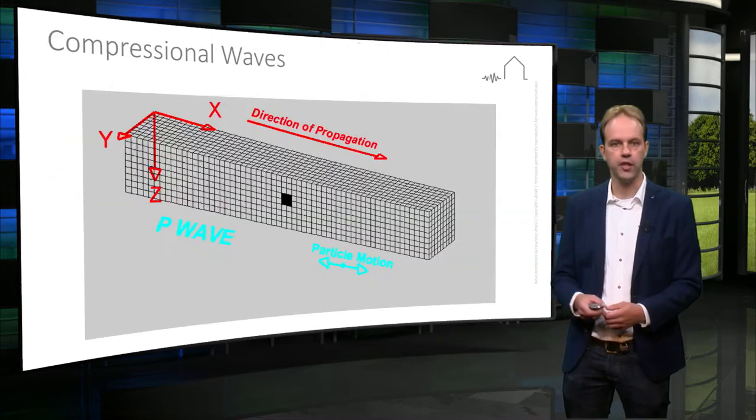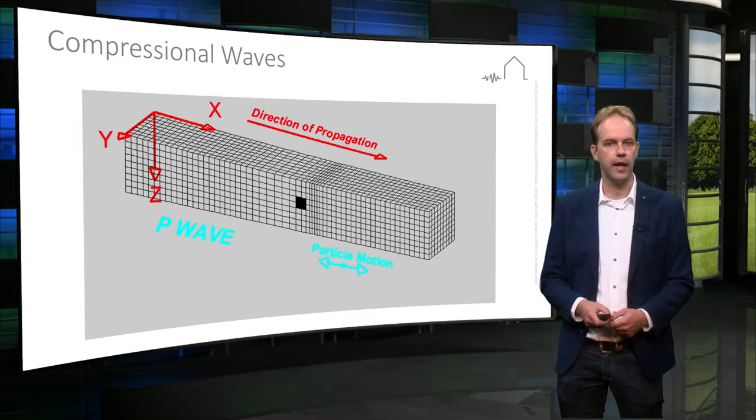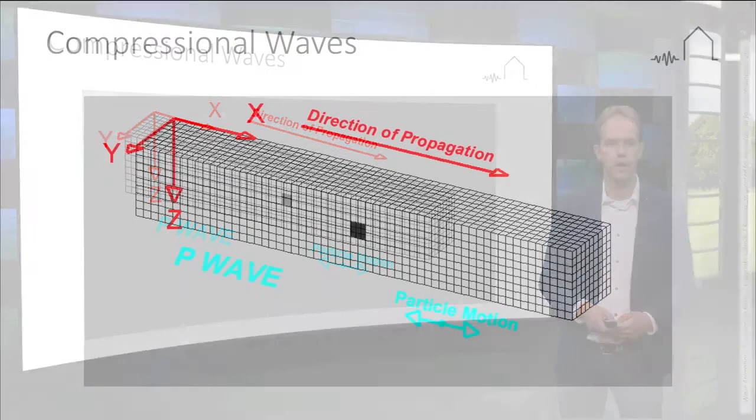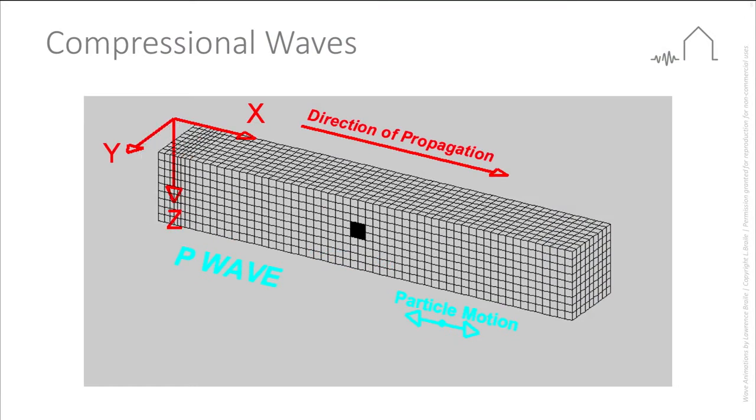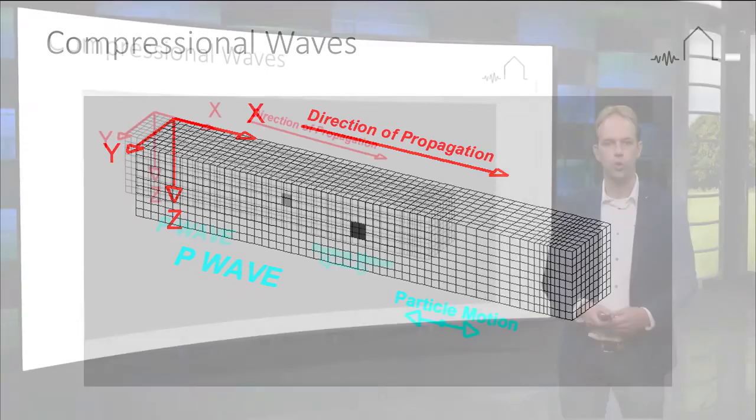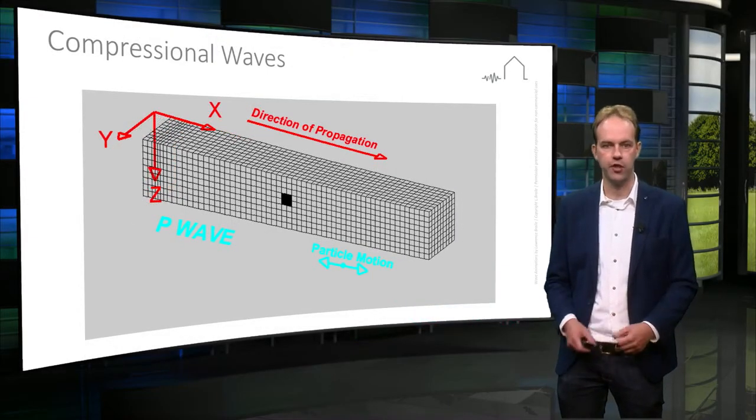P-waves or compressional waves are the fastest seismic waves that travel through the earth and thus they are also the first ones that are recorded at a seismic station. They are characterized by particle motion in the same direction as the direction of propagation of the wave. You could compare this to the propagation of sound through the air and waves in a stretched spring.